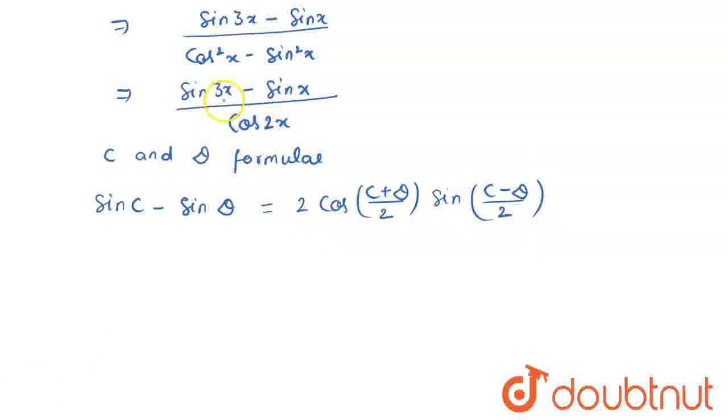So, here in the numerator, if I let c is equal to 3x and I assume that my d is equal to x, then I can write down the expansion of the numerator as twice cos. What is c plus d by 2? That is 3x plus x by 2. That is 2x into sin of 3x minus x 2x divided by 2. That is x and whole divided by cos of 2x.